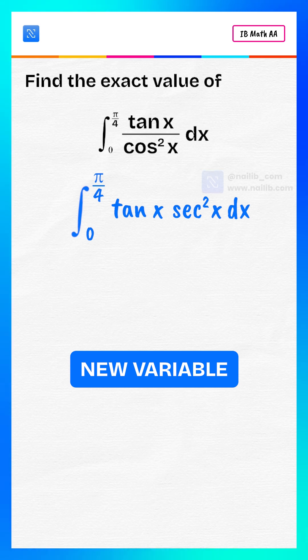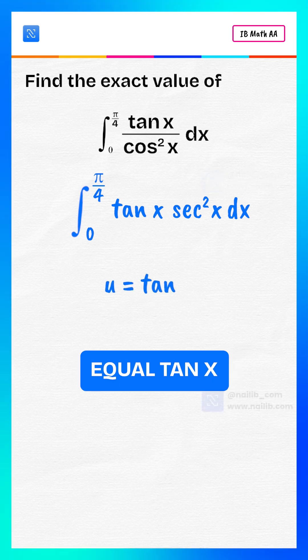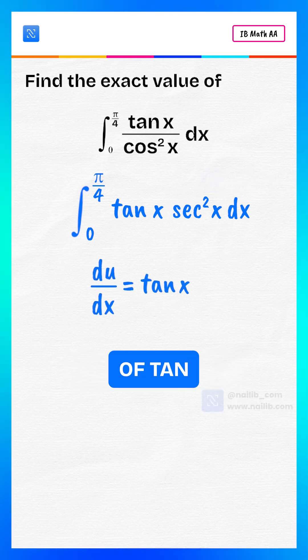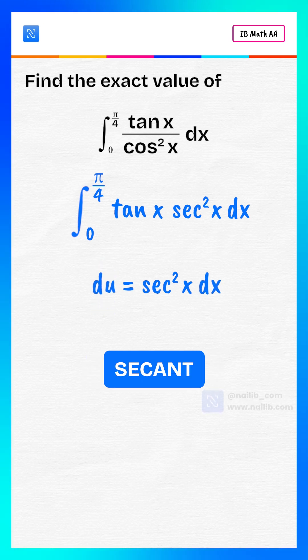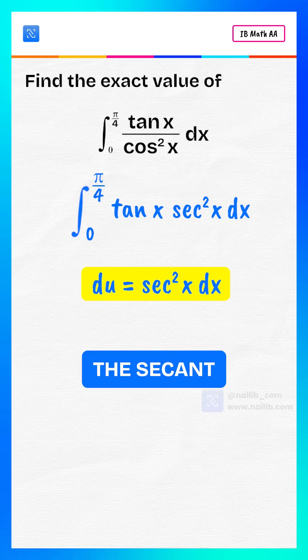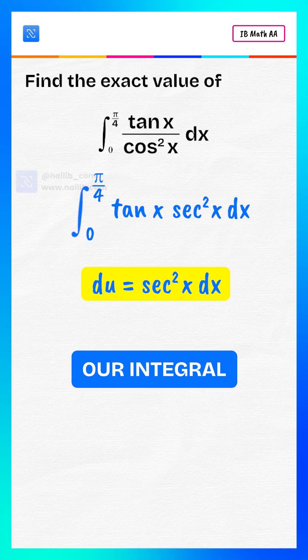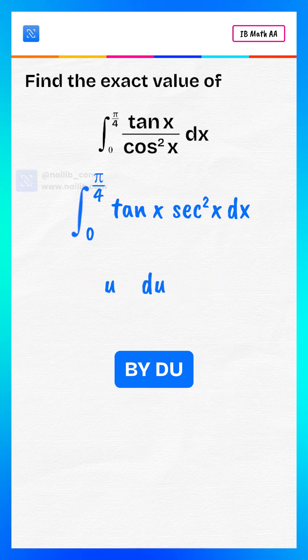Let's set a new variable. Let u equal tan x. Then the derivative of tan x is secant squared x. So du equals secant squared x dx. That means the secant squared x dx part of our integral can be replaced by du.